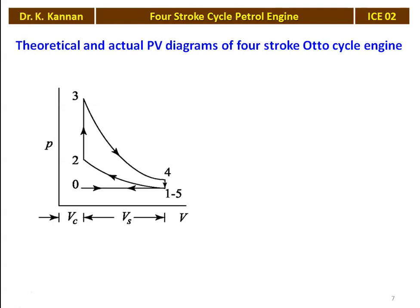The Otto cycle is a closed cycle, whereas the engine is an open system. In the theoretical Otto cycle there is no suction and exhaust. We have four processes: compression, heat addition, expansion, and heat rejection.